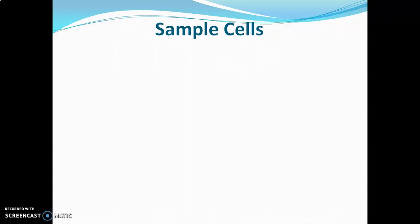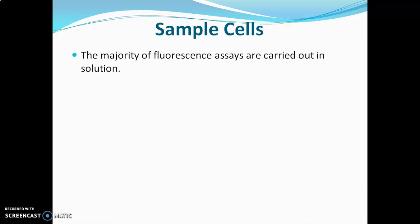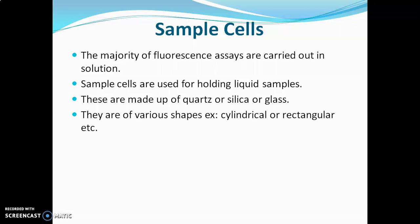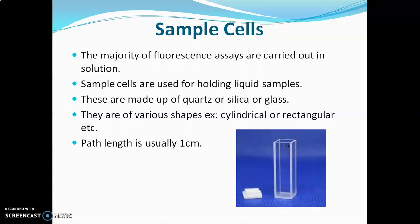The sample cell is used to hold the liquid samples, as the majority of fluorescence assays are carried out in solution form. These cells are made of either quartz, silica, or glass, and are of various types such as cylindrical or rectangular. Generally, the path length is 1 cm.